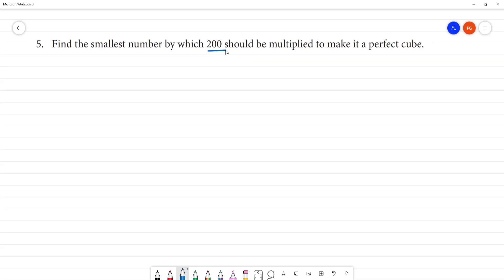Find the smallest number by which 200 should be multiplied to make it a perfect cube. So, this is exercise 1.5 of 5th, is important.